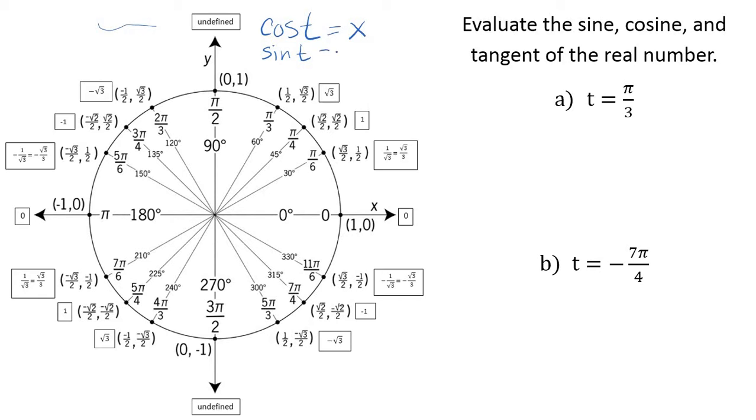Sine of any value t is the y-value that we see. And let me just come over here. Tangent of t is the ratio of those, so it's y over x. So that's what's built into this unit circle for us.